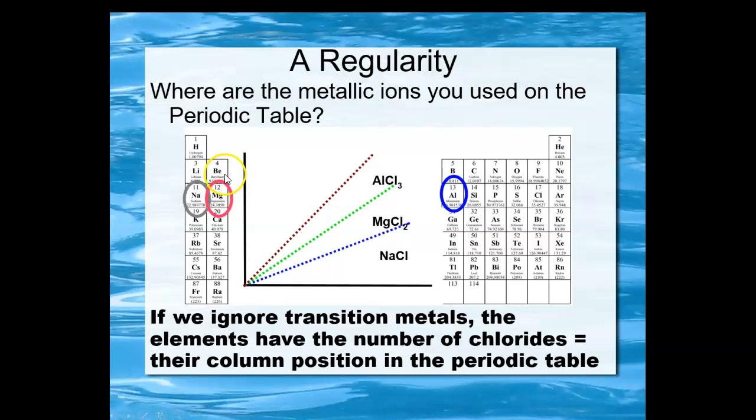And if we ignore the transition metals, the elements sodium and magnesium have one and two chlorides connected to them. And then aluminum has three. So it looks like the column position in the periodic table, first column, second column, and what we might call a third column of the representative elements, give you the number of chlorides that they are bound with in the salt.